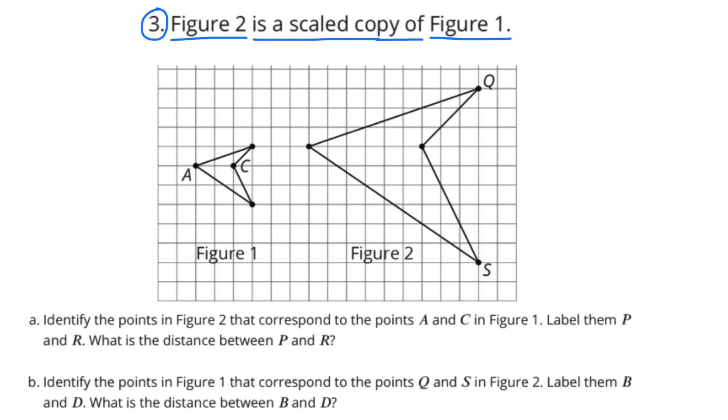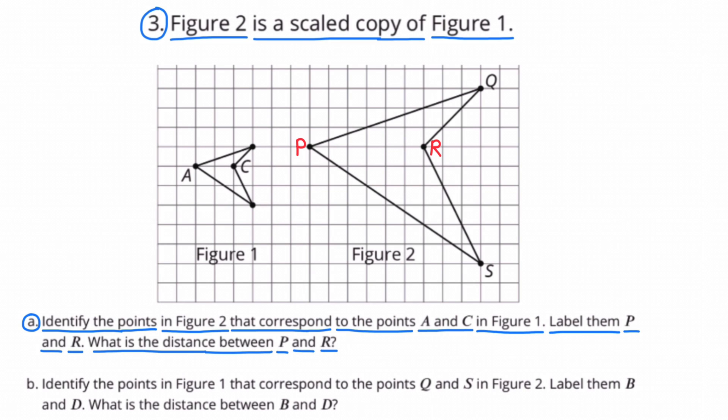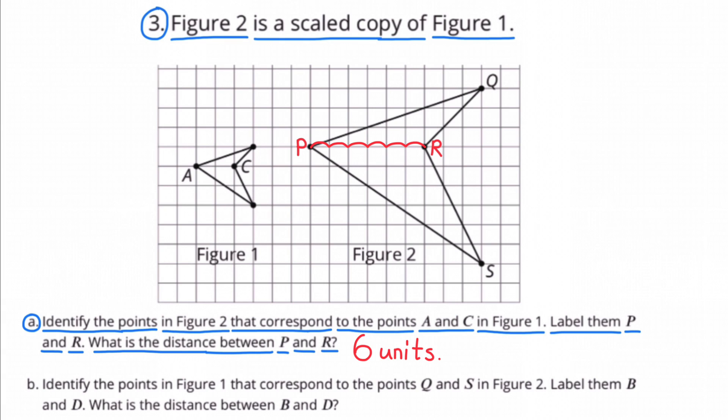Number 3. Figure 2 is a scaled copy of Figure 1. A. Identify the points in Figure 2 that correspond to the points A and C in Figure 1. Label them P and R. What is the distance between P and R? Here are the points P and R that correspond with points A and C. The distance between points P and R is 6 units.